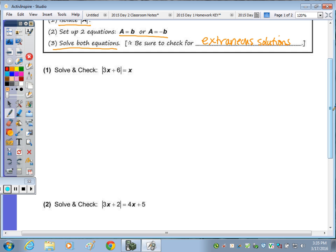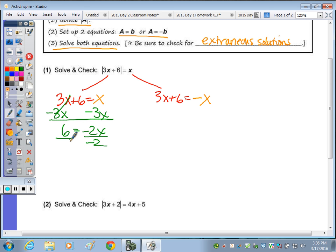So in number one, the absolute value of expression is isolated, so we're going to set up our two equations. So 3x plus 6 stays the same for one, equals a positive x, and then we negate it for the other, becomes a negative x. In solving both, we're going to start by subtracting 3x from each side. 6 equals negative 2x, divide by negative 2, and we get x equals negative 3.